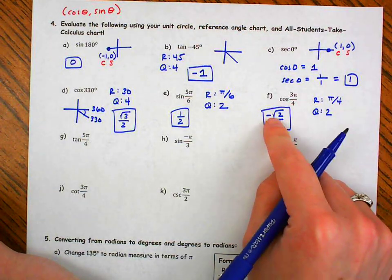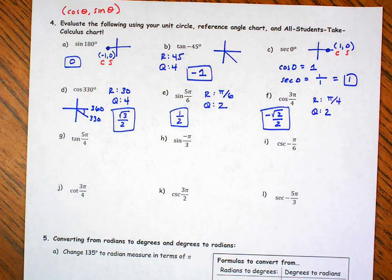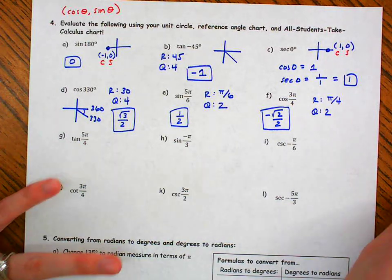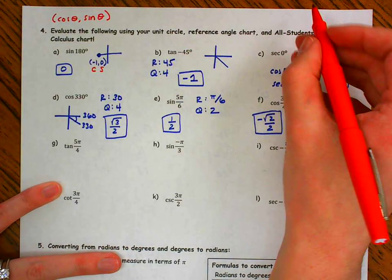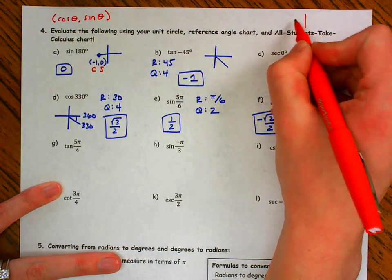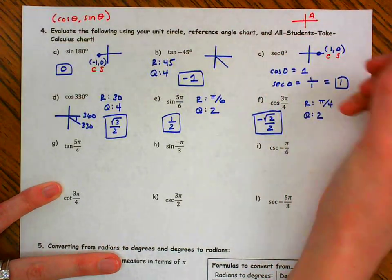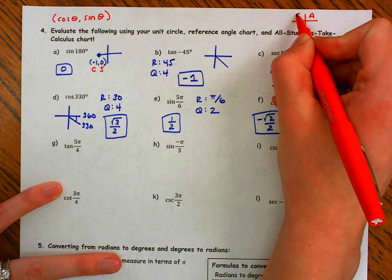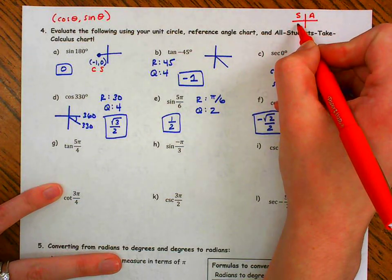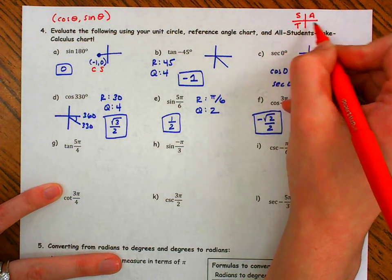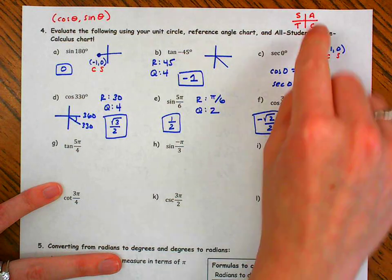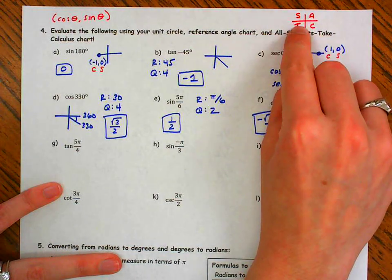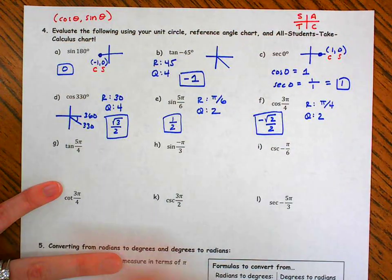You might be thinking: how do I know my quadrant so fast? Remember, it's "All Students Take Calculus." In the first quadrant, all trig functions are positive. Here, sine is positive. Here, tangent is positive. Here, cosine is positive. That's where that phrase comes from.